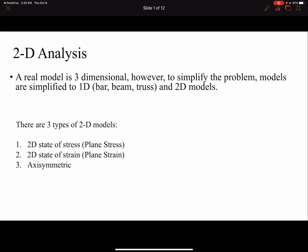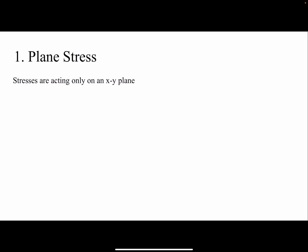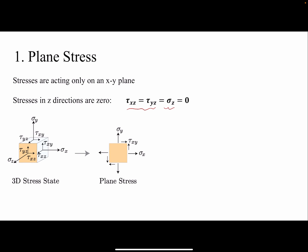For 2D models we have three choices: plane stress, which means stresses are acting only on one plane; plane strain, where we have strains only on one plane; or axisymmetric. In plane stress, stresses act only on the XY plane, so stresses in the Z direction are zero. In 3D we have nine components of stress, but due to shear stress symmetry we have six independent components. In plane stress that reduces to just three components.